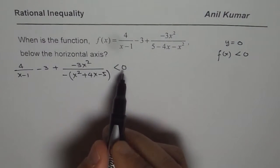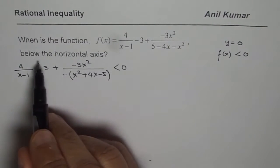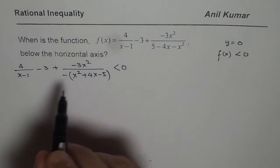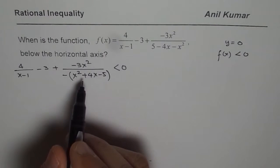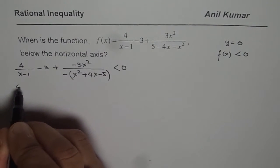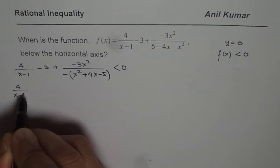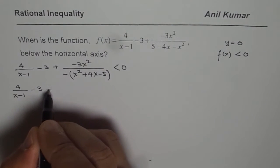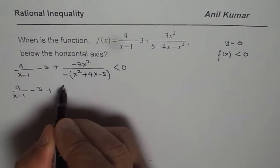If it is less than 0, then the value will be below the horizontal axis. Now before we actually go further, we need to factor the denominator. So we will get 4 over x minus 1 minus 3. Minus and minus becomes plus, so we have plus 3x squared.